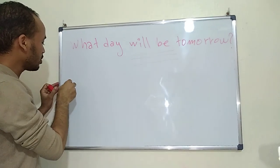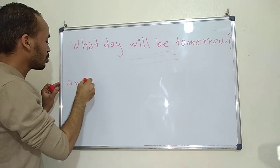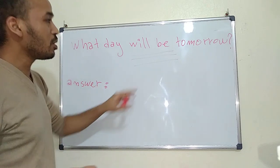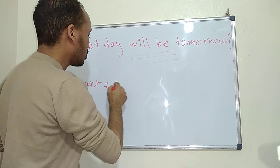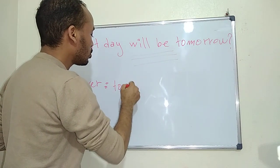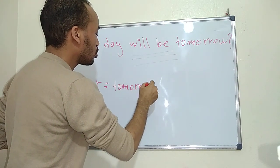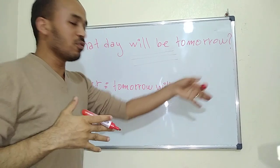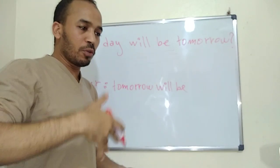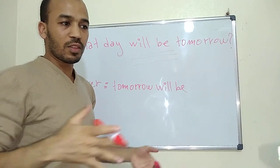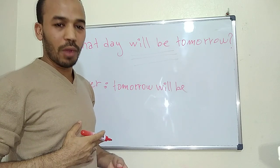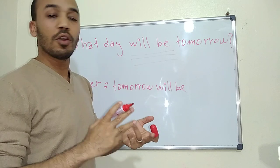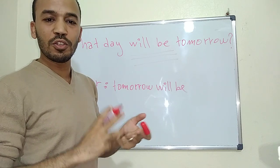So: 'What day will be tomorrow?' The answer starts with 'tomorrow': 'Tomorrow will be...' and we write the day we want. Suppose that today is Tuesday — automatically tomorrow will be Wednesday. Because we go Monday, Tuesday, Wednesday.